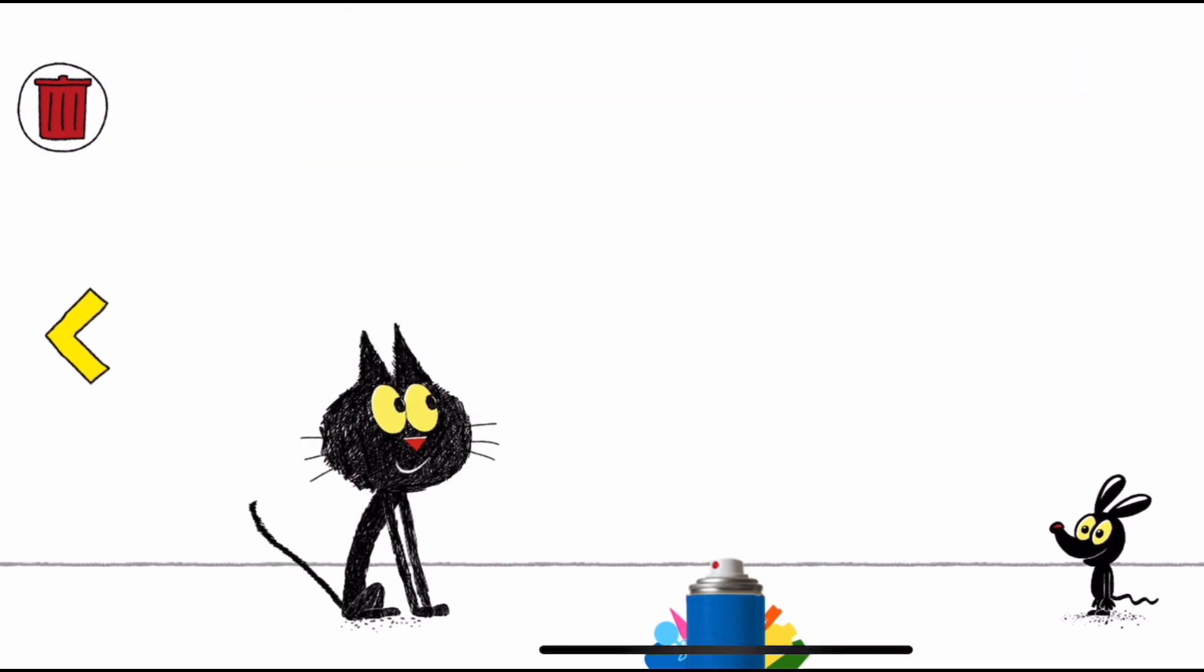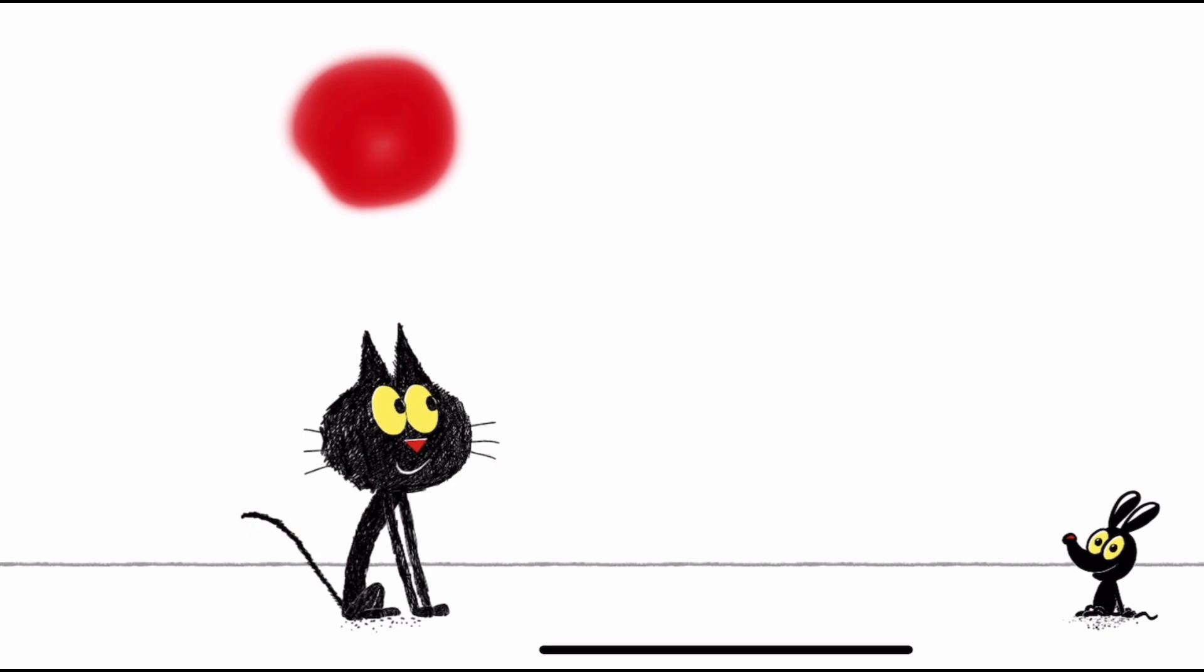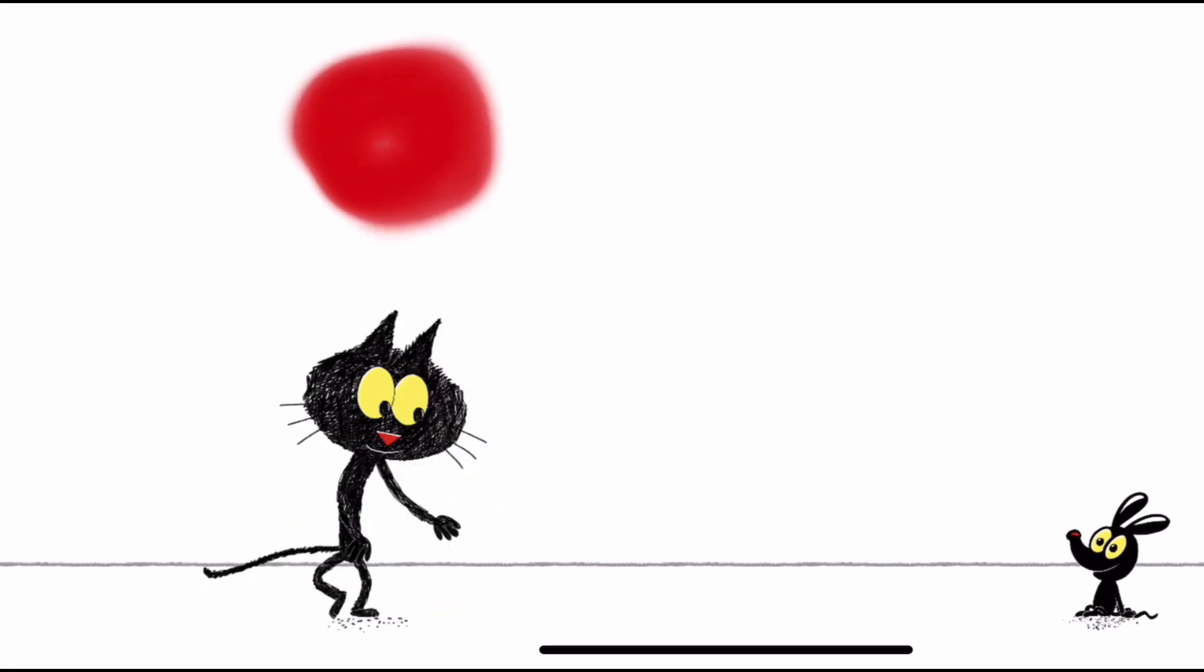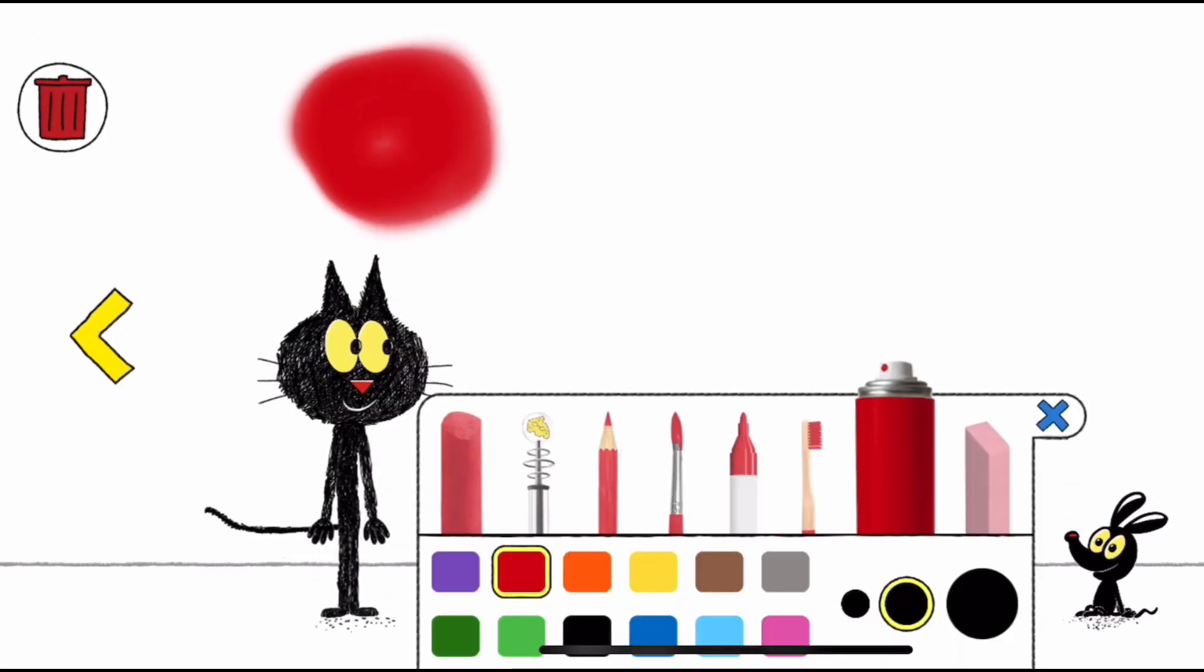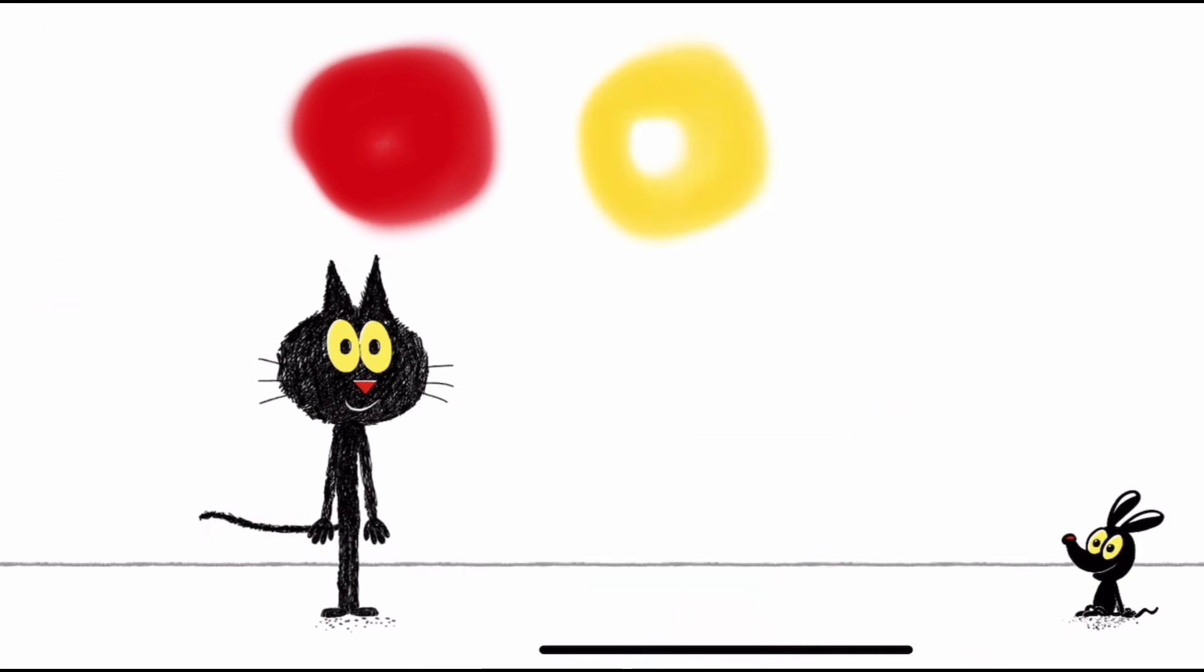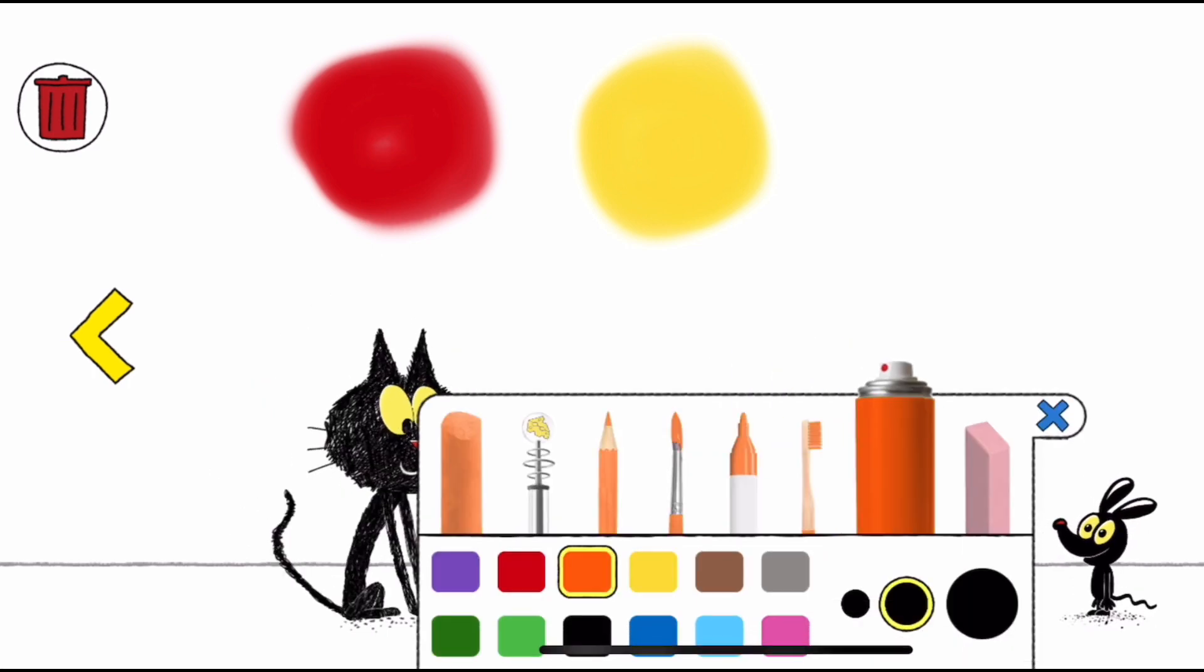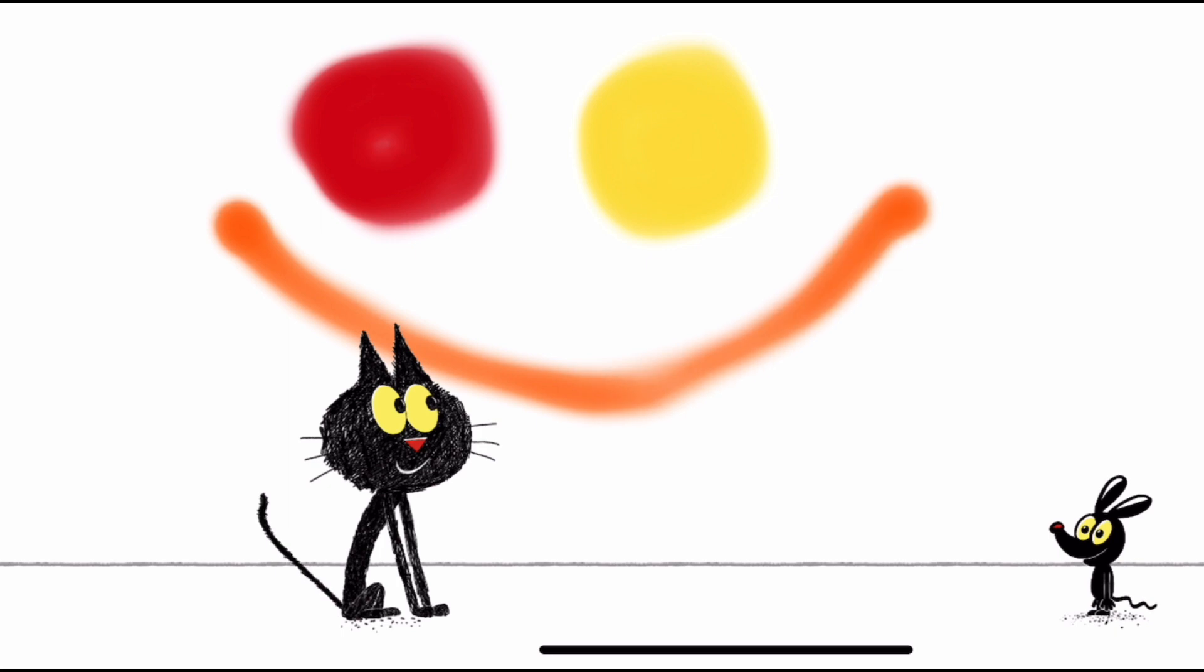Now that we know about the primary colors, let's learn about secondary colors. Do you know if you mix red and yellow, what color you get? Yes! Orange! That's a smiley face!